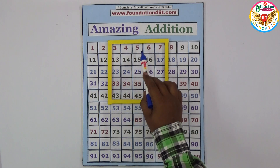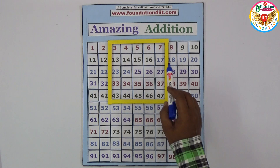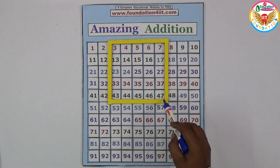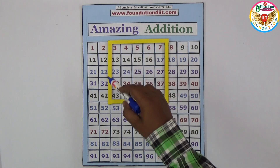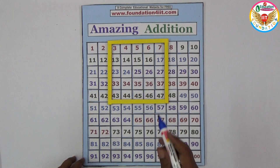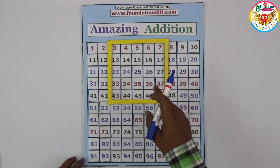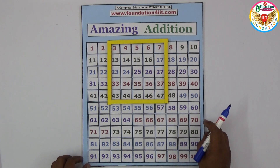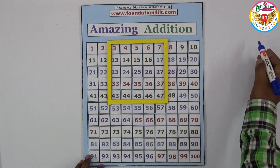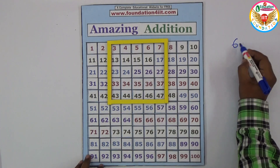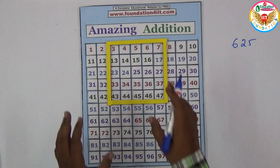The numbers within the box — for example 3, 4, 5, 6, 7, then 13, 14, 15, 16, 17, and so on up to 47 — the sum of all these numbers can be said in one second without adding each one individually.